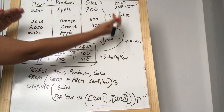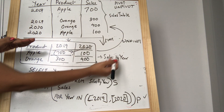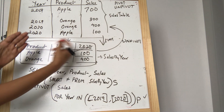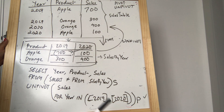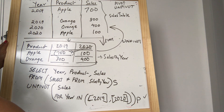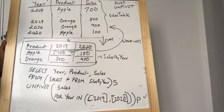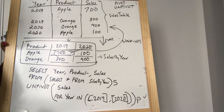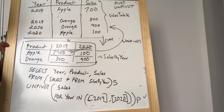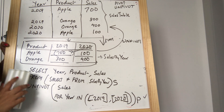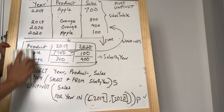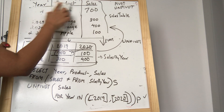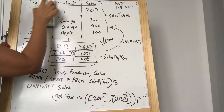So we unpivot this table from the aggregated form back to row form. I hope you understand what SQL Pivot and Unpivot is. Please let me know if you have any queries, and thank you for watching.